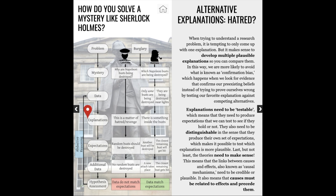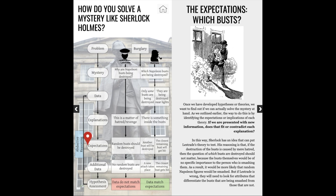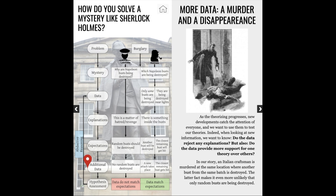In order to explain why they're being destroyed, he asks: what do the smashed busts have in common that's different from the other busts? As he's developing his own hypotheses, another home is broken into and the Napoleon bust inside it gets smashed too. But this time, an Italian man named Vannucci is found dead on site, which reminds Sherlock of an unsolved crime from years ago that involved an Italian maid also named Vannucci.